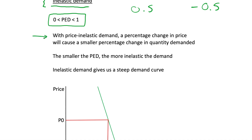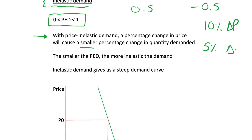A lot of this video is going to be the opposite of the elastic demand video. With price inelastic demand, a percentage change in price will cause a smaller percentage change in quantity demanded. So if we were to have a 10% change in price, with inelastic demand we're going to have a smaller percentage change in quantity demanded.